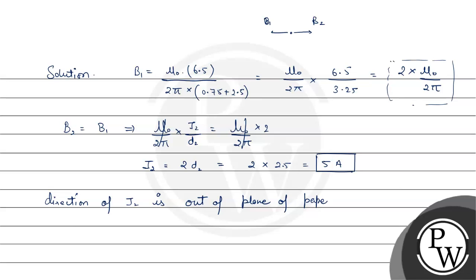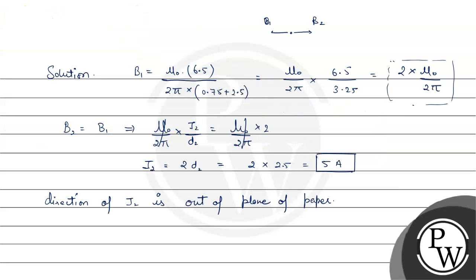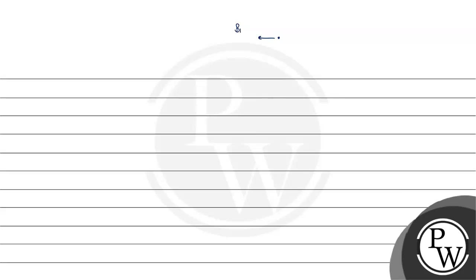So i2 has been found to be 5 ampere. Now for its direction: since B2 must point in the opposing direction, by the right-hand thumb rule the current in wire 2 must be out of the page. So the direction of i2 is out of the plane of paper. This is the answer to part one. For part two, if the current in wire 2 is reversed, the direction of i2 will be into the plane of paper. In that case, B1 and B2 will both point in the same direction.